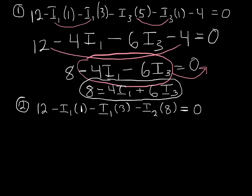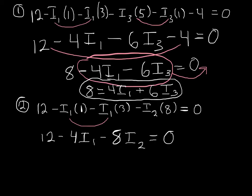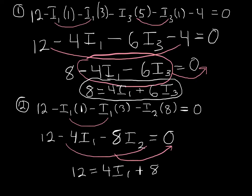Now simplifying the second loop the same way. Loop 2 has I1 times 1 and I1 times 3, which combine to give 4·I1. So: 12 minus 4·I1 minus 8·I2 = 0. Adding the unknown parts to the other side gives 12 = 4·I1 + 8·I2.